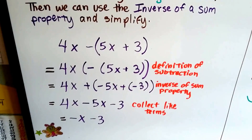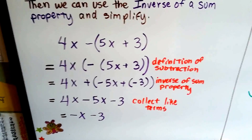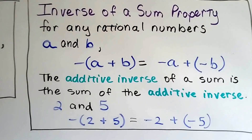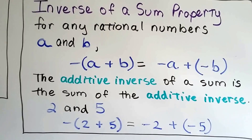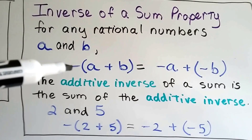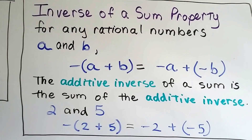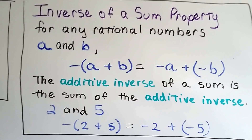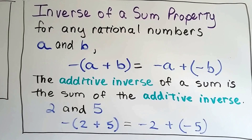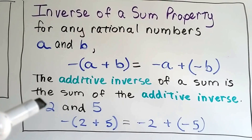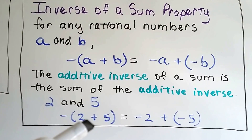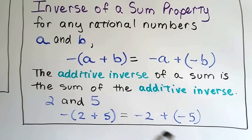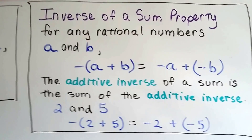Now, this probably sounds really confusing, so let's take a look at this again. This is the inverse of a sum property. For any rational numbers a and b, if we have a negative sign outside of the parentheses, the additive inverse of a sum is the sum of the additive inverses. So if a and b were 2 and 5, then negative outside the 2 plus 5 just means negative 2 plus negative 5. That's all they're saying.